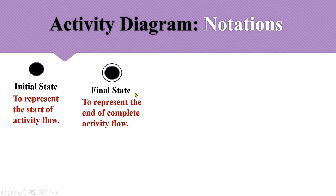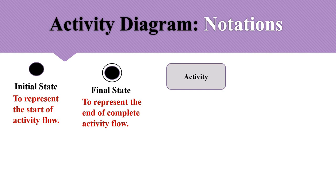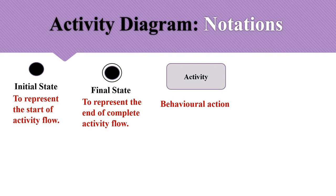Similar to automata theory where a double circle represents a final acceptable state, in activity diagrams the final state is represented by a solid circle surrounded by one boundary circle. Next is the activity notation. Activities represent your behaviors or actions within the system. An application can have multiple activities completing in sequential, alternate, concurrent, or any other manner.